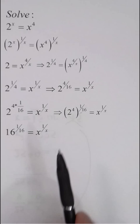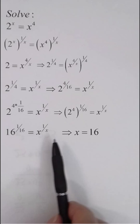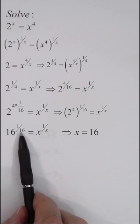Basically we are saying that if x to the 1 over x is equal to y to the 1 over y, then x and y must be equal. x must be equal to 16.